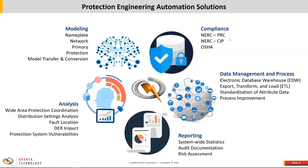Some high-level categories of what you can automate in protection engineering: compliance — lots of different PRC standards, PRC-23, 25, 26, 27, SIP requirements in terms of ports and services and firmware (SIP 6, SIP 10). If you're looking at distribution, OSHA arc flash requirements and PPE safety calculations can be fairly automated throughout your system.